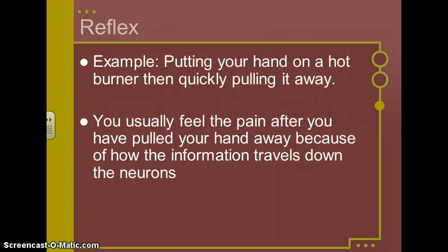Let's talk briefly about a reflex. An example of a reflex would be putting your hand on a hot burner, and then really quickly pulling it away. Generally, you're going to feel the pain after you've already pulled your hand away, because of how information travels down the neurons and to the spine. Another example would be when the doctor hits your knee, and you automatically respond by kicking your leg out.